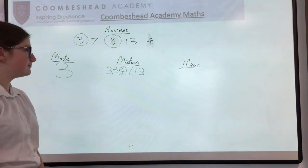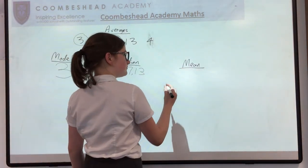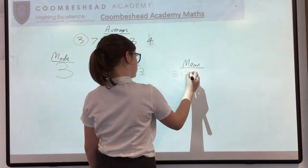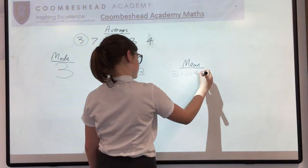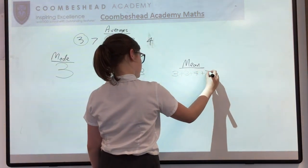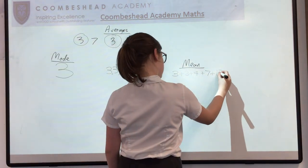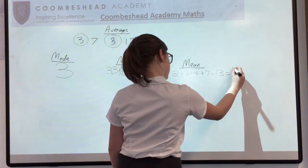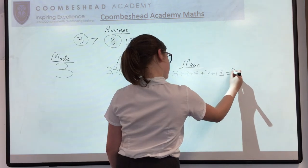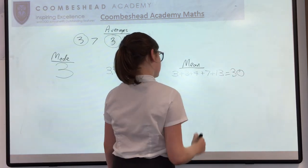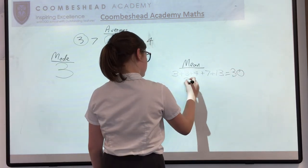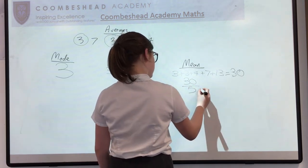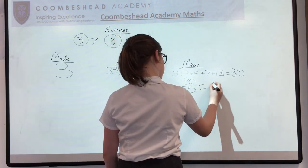The last one is mean. So you add them all together, which in this case equals 30. And then divide it by however many numbers you added together. So in this case, five. And this equals six.